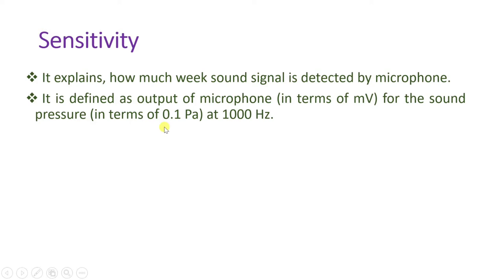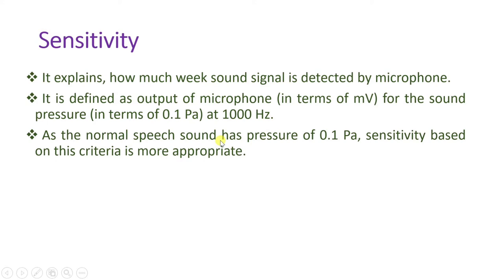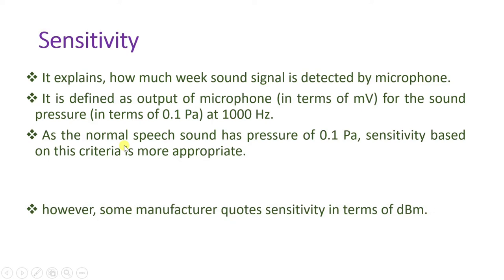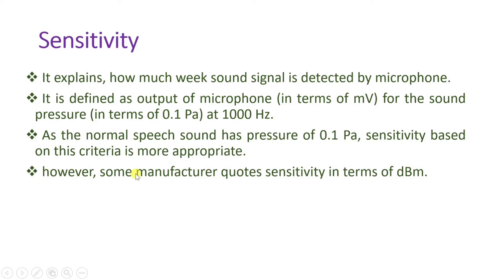This is a predefined standard. We check the microphone with a 1000 Hz signal and a pressure of 0.1 pascal to see what millivoltage is received as the electrical signal. As normal speech has a pressure of 0.1 pascal, sensitivity uses this same criteria. However, some manufacturers quote sensitivity in terms of dBm, so they measure the received signal in terms of dB millivoltage. For example, 2×10⁻³ volts gives 10 log(2×10⁻³) in dBm.